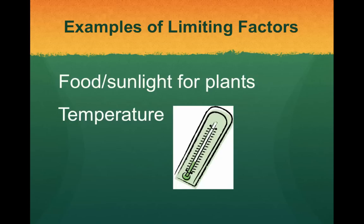Temperature is another limiting factor. If things are too cold or too hot, organisms can't survive. Think about if you were in the desert — it would be very difficult for you to survive when it's super hot out. In the same respect, if you were in the Arctic and it were very cold, you wouldn't be able to survive. The same goes for organisms — if it's too hot or too cold, organisms cannot survive, or it would cause their populations to decrease or be limited.